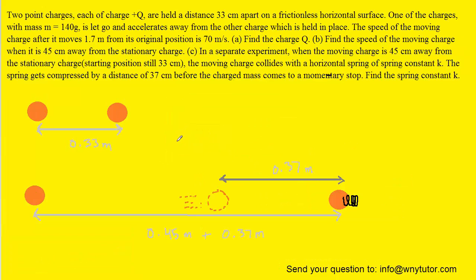We now move on to part C, which asks us to find the spring constant K. We go back to the initial scenario when the two charges were separated by 33 centimeters, and note once again that the initial energy is the electrical potential energy, which we can symbolize as Ui.